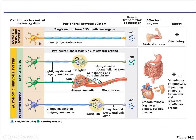Here is the somatic nervous system: we have a cell body with an axon going down to an axon terminal, releasing acetylcholine at the neuromuscular junction, stimulating skeletal muscle cells to contract. But in the autonomic nervous system on the sympathetic side, the preganglionic axon is myelinated and releases acetylcholine at the synapse at the autonomic ganglion. Downstream from that, the unmyelinated postganglionic axon releases norepinephrine. So the sympathetic preganglionic axon always releases acetylcholine at the autonomic ganglion, and the postganglionic unmyelinated axon always releases norepinephrine.